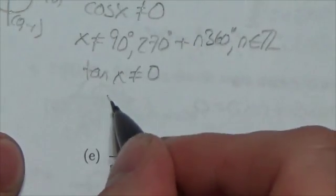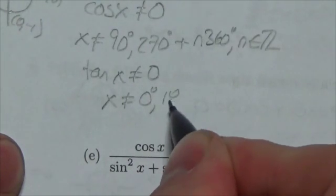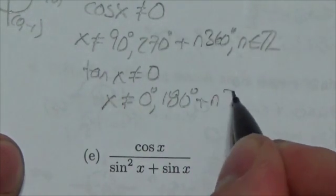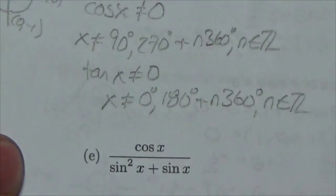So we might write here, x is not allowed to equal zero degrees or 180 degrees, plus n times 360 degrees, where n is an element, again, of the integers.